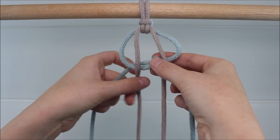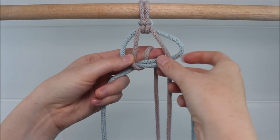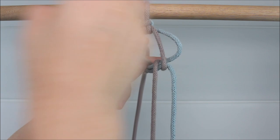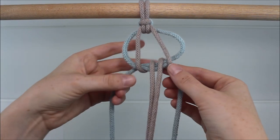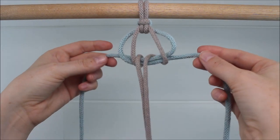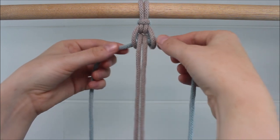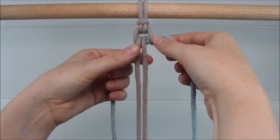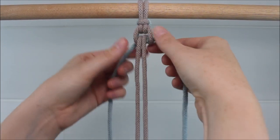Now take the left side behind, around, and through the center loop. Pull those blue cords to tighten it up. And then you can pull your middle cords as well to get everything to sit into place.